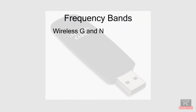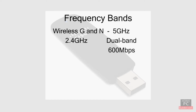Wireless G and N operate at 2.4 gigahertz. Wireless N can also run at 5 gigahertz, which offers better data rates. A wireless N router that can also run in the 5 gigahertz band, called dual band, can transmit data at 600 megabits per second. You also need dual band capable wireless N adapters to take advantage of the speed increase.